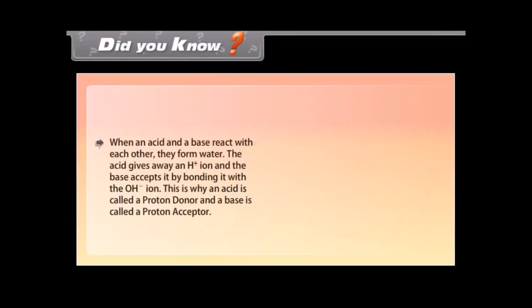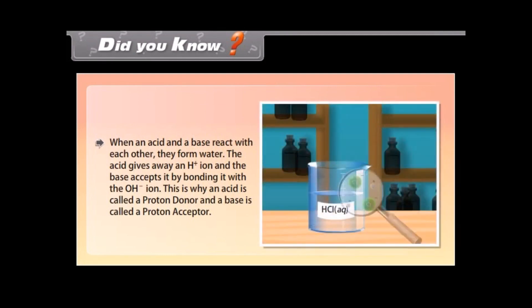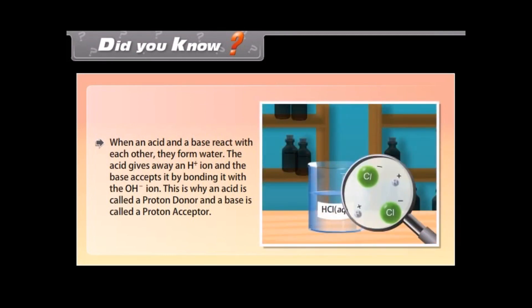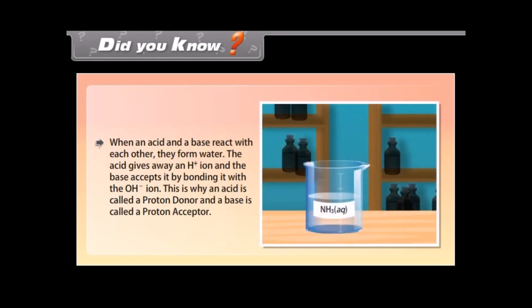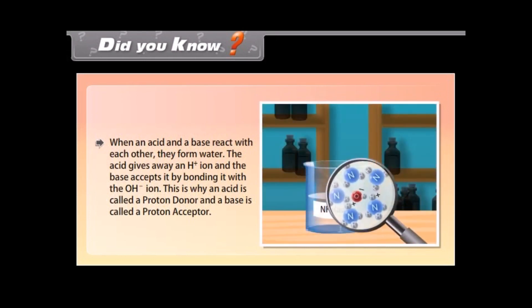Did you know? When an acid and a base react with each other, they form water. The acid gives away an H+ ion and the base accepts it by bonding it with the OH- ion. This is why an acid is called a proton donor and a base is called a proton acceptor.